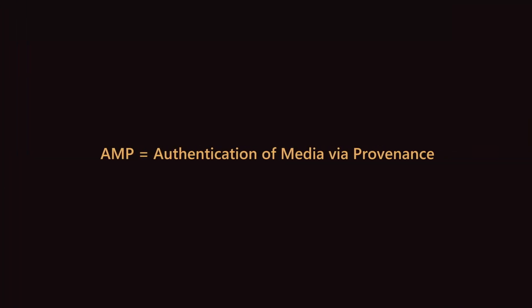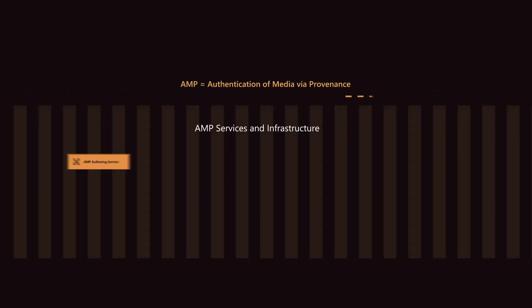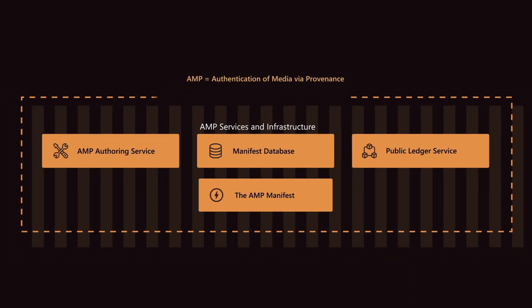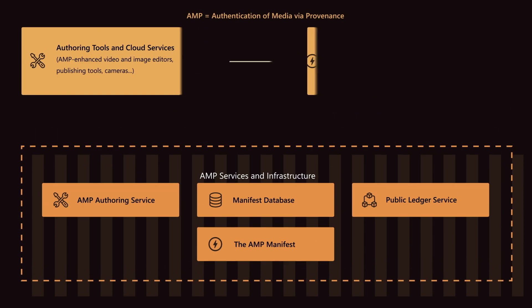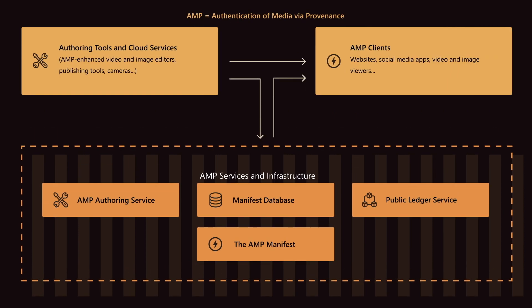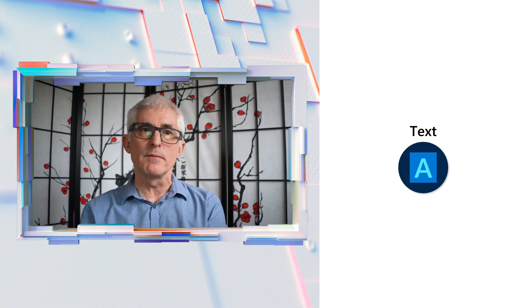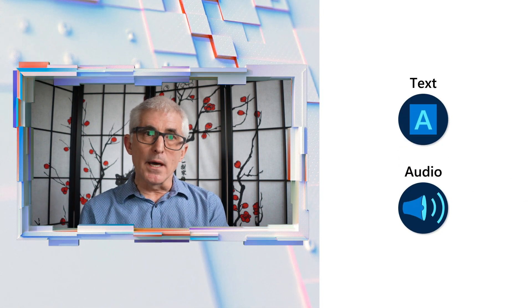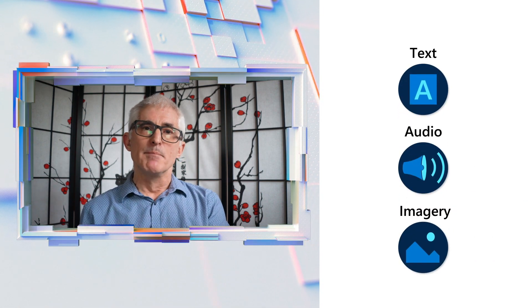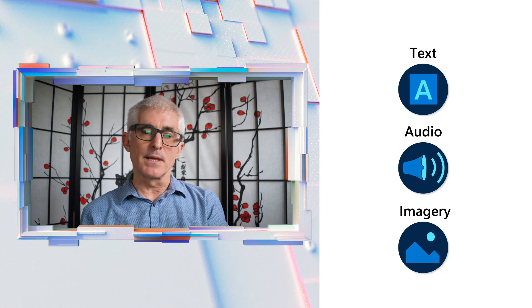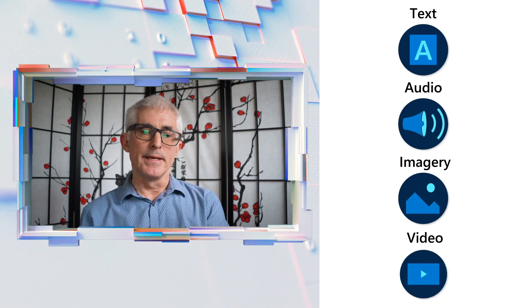Rather than trying to detect fake media on the internet, what we're trying to do with Project Origin is to put a provenance or authentication layer on media on the web, so that when you get a piece of media, you can simply see where it came from. We can work with any sort of media — simple media like a text file or a PDF document, but also audio, imagery — but the media we've been focusing most on in Project Origin is video.